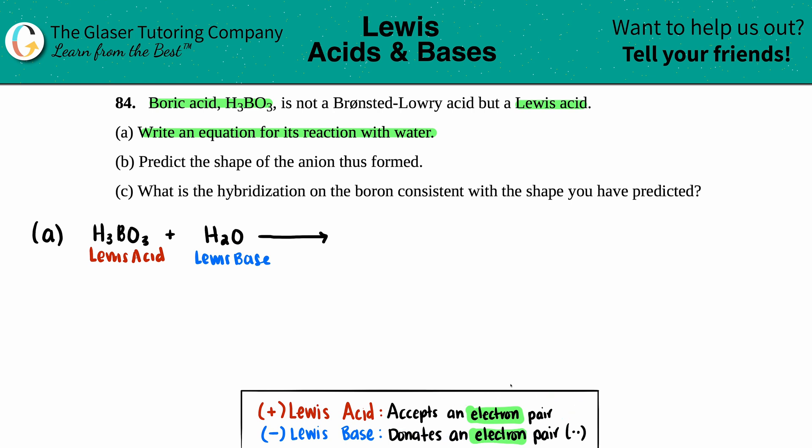To see what's going on here, we're probably going to have to draw what these two compounds look like. I see that part (b) says predict the shape of the anion thus formed, so maybe we can start by seeing what those shapes are.